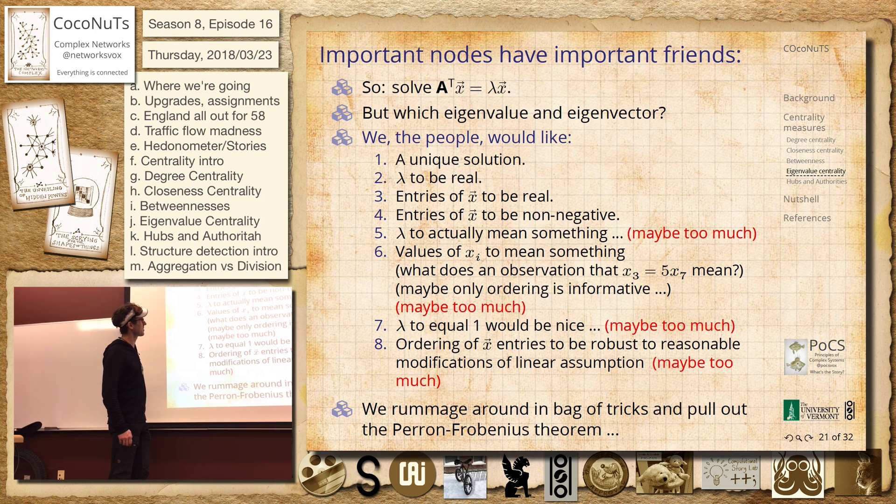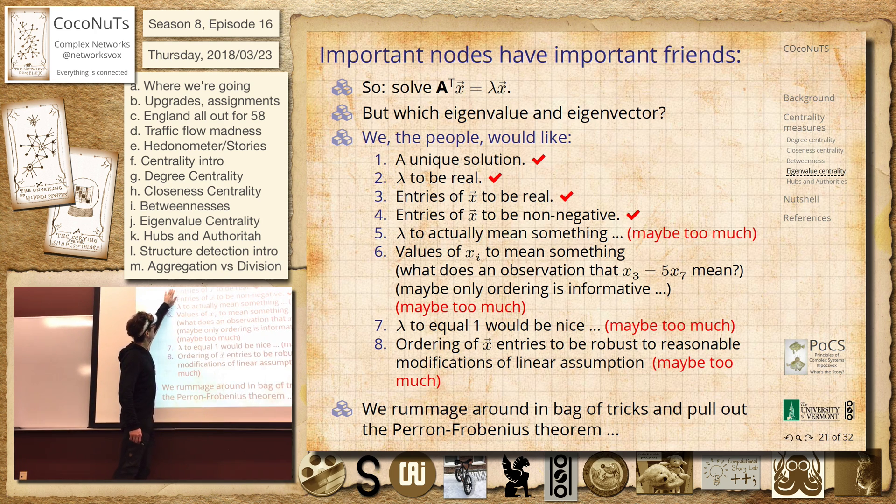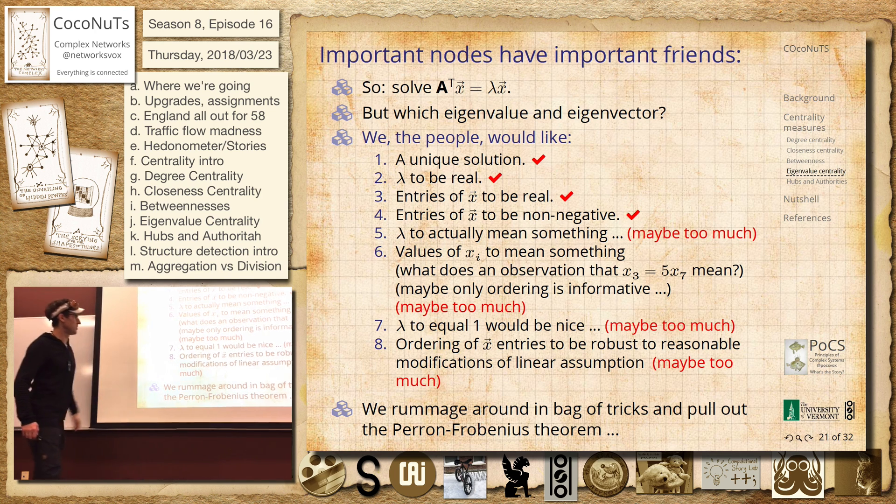Perron-Frobenius theorem is a good thing. So we'll write that out on the next page. And we'll get these things. So we'll get a real eigenvalue, yeah, real entries to be real, non-negative, and a unique solution.